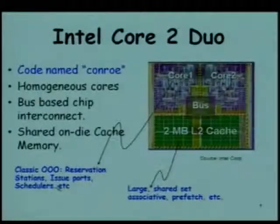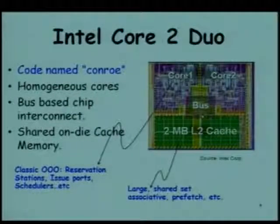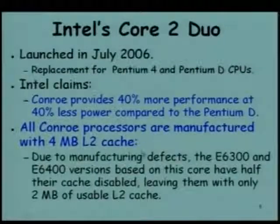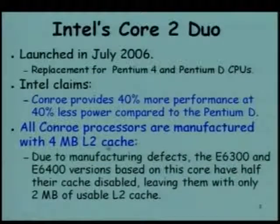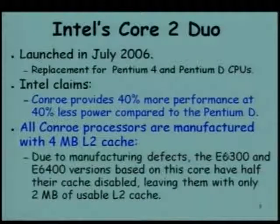We were discussing how the cores are placed, the back-end bus inside which connects the cores, and the L2 cache which is shared. The Conroe processors have a 4 MB cache, but depending on manufacturing success, they are actually sold as a 2 MB E6300 or E6400 processor, or a 4 MB cache variant.